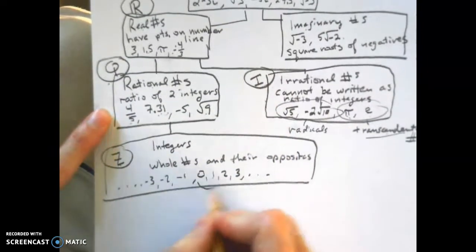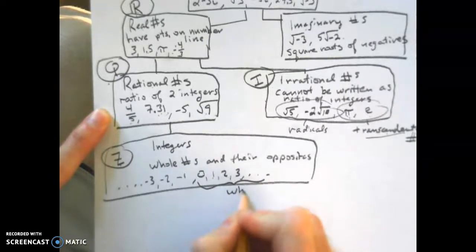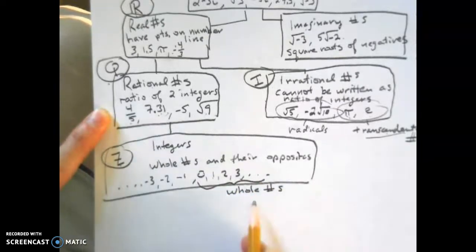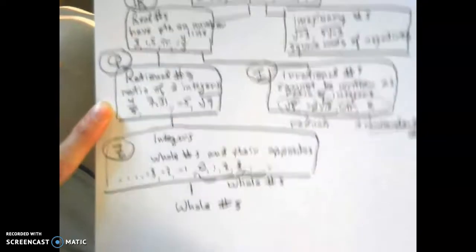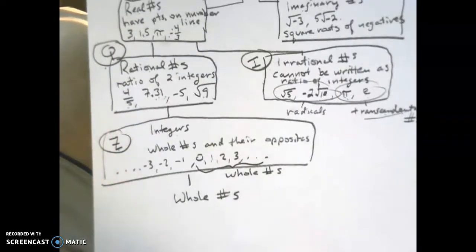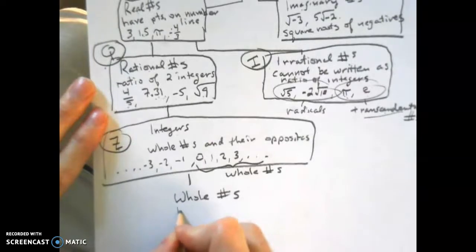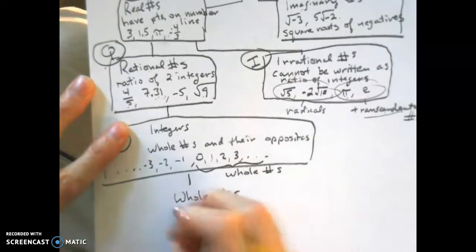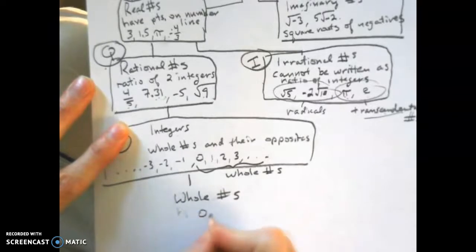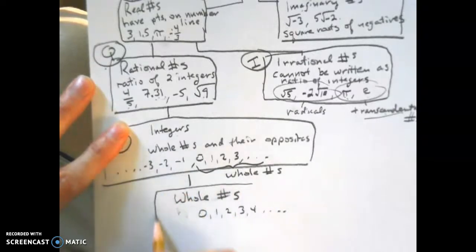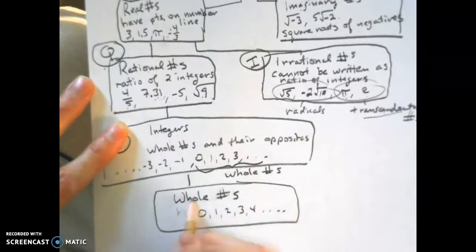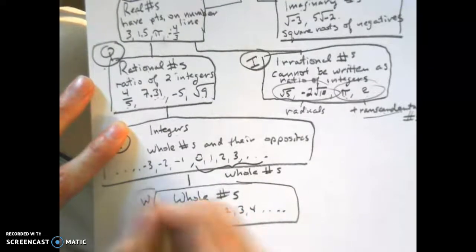The numbers 0 and above within the integers are called whole numbers. Whole numbers are a subset of the integers. They are 0, 1, 2, 3, 4, and go all the way to positive infinity — just the integers 0 and above. To abbreviate whole numbers, we use a capital W.